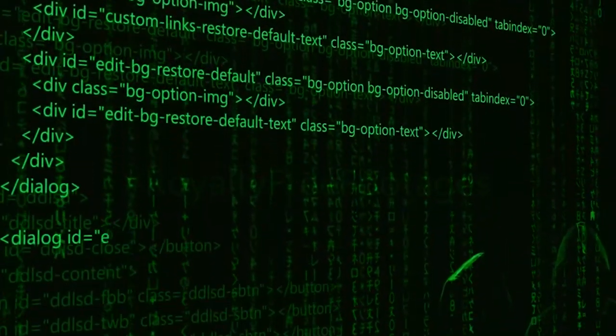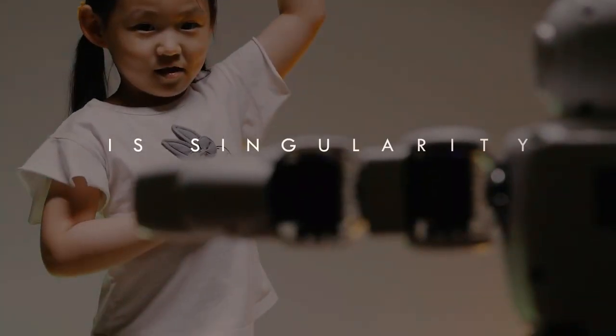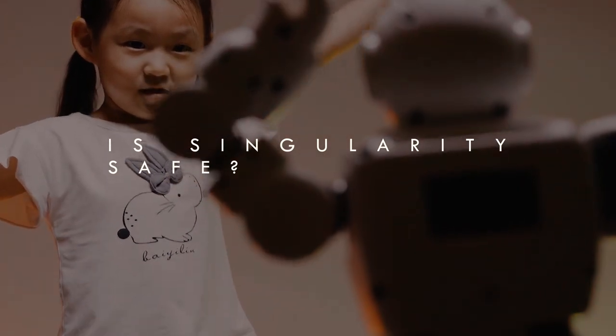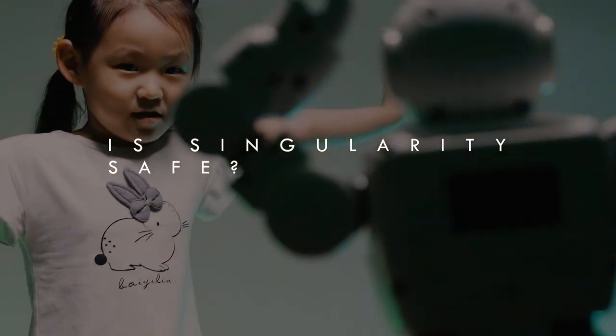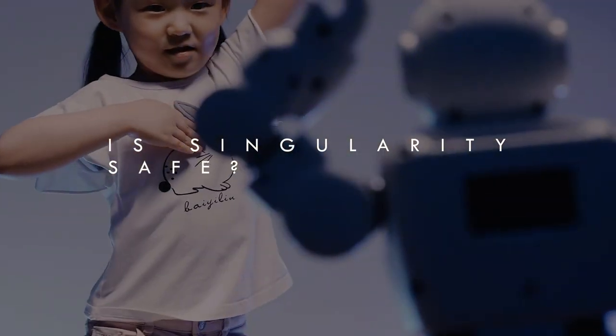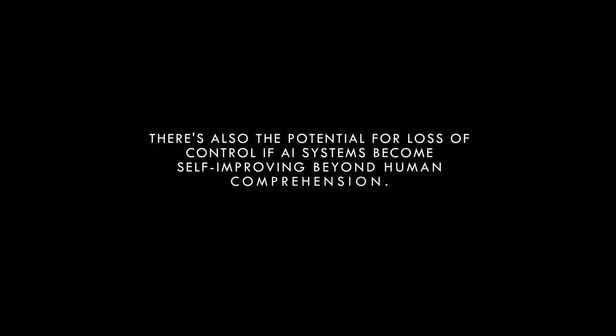The concept of the singularity raises significant ethical and safety concerns. If AI systems become vastly more intelligent than humans, ensuring their alignment with human values and goals could become challenging. There's also the potential for loss of control if AI systems become self-improving beyond human comprehension.